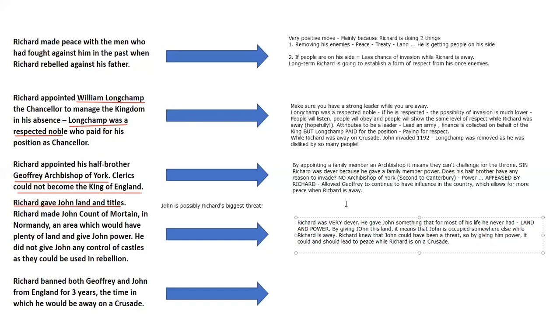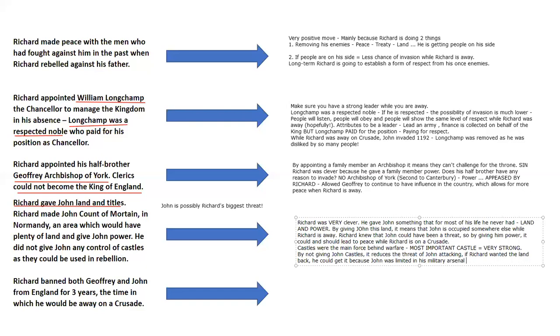On top of this, Richard was also very clever by not allowing John any castles. Now we might look at castles today and think, well what's the big deal? But castles were the main force behind warfare in this time period. If you had control of the most important castles, you were very, very strong. By not giving John any castles, it reduces the threat of John attacking, but also if Richard wanted the land back, he could get it, because John, even though he had power, was limited in his military arsenal. So he had very little to fight back with. And this last bit, this shows that Richard really understood the importance of England.